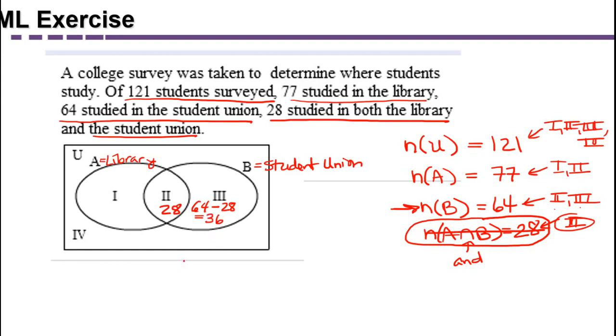64 minus 28 is going to be, let's see, 36 students that just studied in the student union, but not in the library. That's what region 3 described.